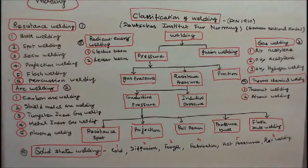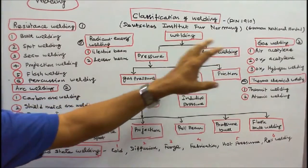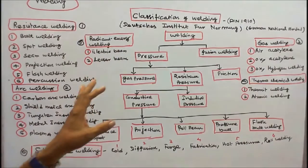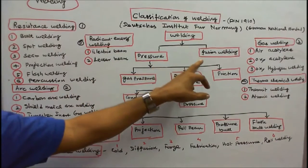As per the German national standard DIN 1910, welding is broadly classified into two: one is pressure welding, another is fusion welding.